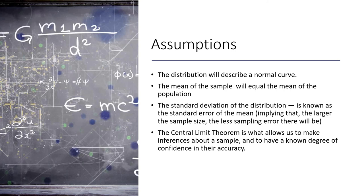The assumptions of the central limit theorem are: the distribution will follow a normal curve, the mean of the sample will equal the mean of the population, and the standard deviation of the distribution — known as the standard error of the mean — implies that a larger sample size results in less sampling error. The central limit theorem allows us to make inferences about the sample and to have a known degree of confidence in their accuracy. Some scholars unnecessarily check normality in social science, where data may not appear normal, but you can simply follow the central limit theorem and continue with parametric test assumptions.